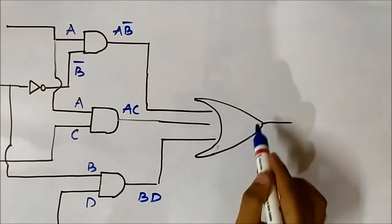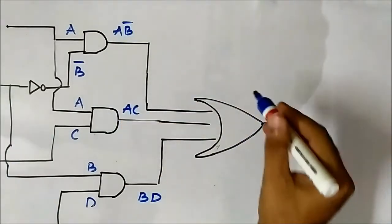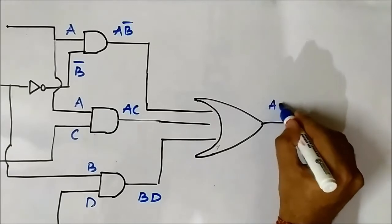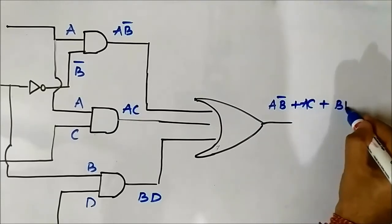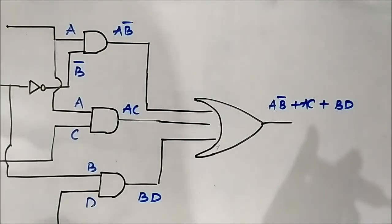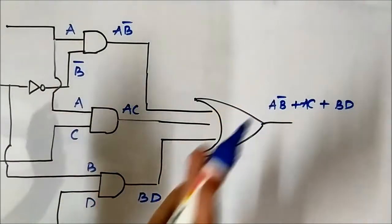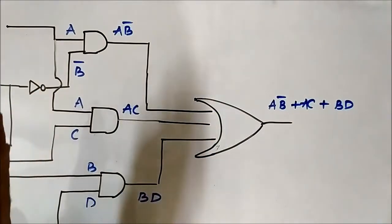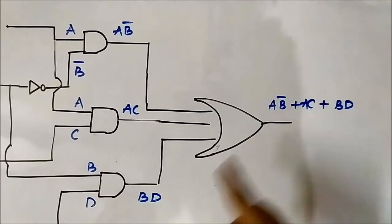The final layer is the three-input OR gate, and the output will simply be the sum of the three inputs: A·B complement OR A·C OR B·D. This is the final output. It was a pretty straightforward question, but it introduces different styles of logic circuit construction and different layers to handle.